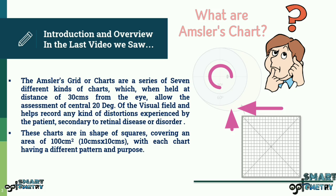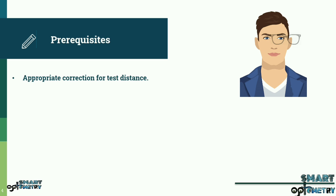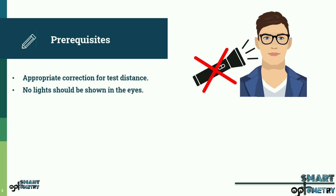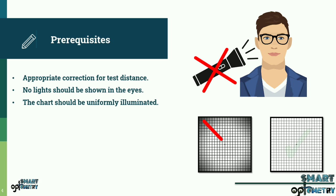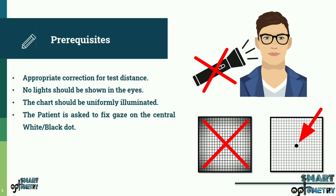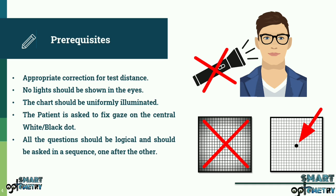Prerequisites. Before the test is administered, the patient should be wearing the appropriate correction for test distance. No lights should be shown in the eyes immediately before the test and the pupils should remain normally constricted. The chart should be uniformly illuminated. The patient is asked to fix gaze on the central white or black dot and answer the clinician's questions during the test. All the questions should be logical and should be asked in a sequence, one after the other.